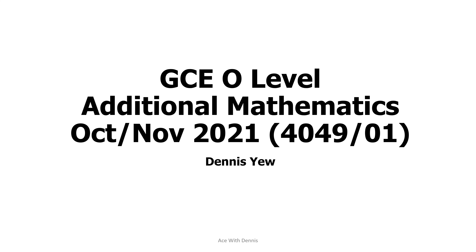Hello everyone, Dennis here. In this video, I am going to discuss with you GCE O Level Additional Mathematics, October November 2021, Paper 1. The subject code is 4049.